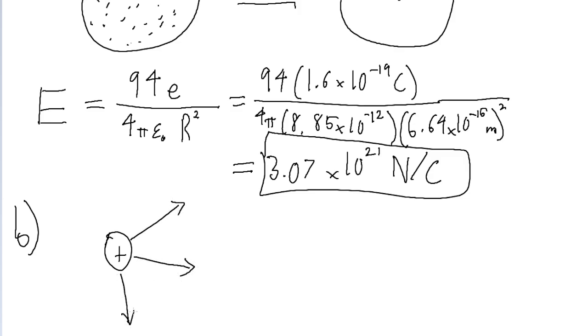So the electric field points radially outward, away from the nucleus. The answer to part B is outward.